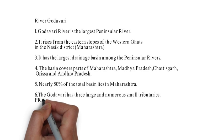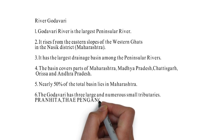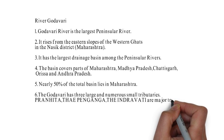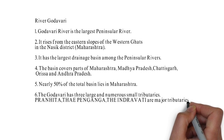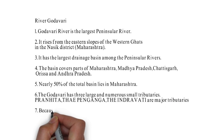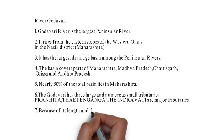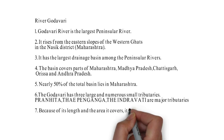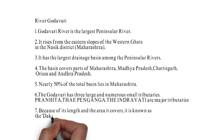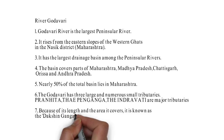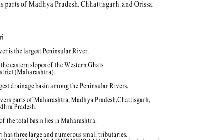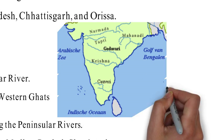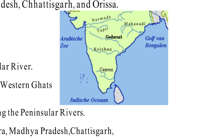To summarize the important facts about the Godavari: it rises in the Nasik district of Maharashtra, drains a large basin of Maharashtra, and crosses through Maharashtra, Madhya Pradesh, Chhattisgarh, Odisha, and Andhra Pradesh. Its three major tributaries are Pranahita, Pen Ganga, and Indra Vati.